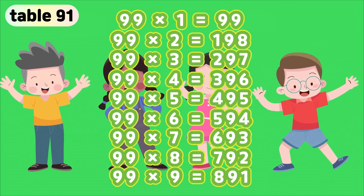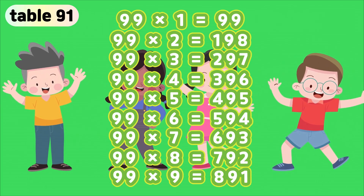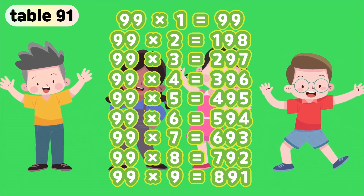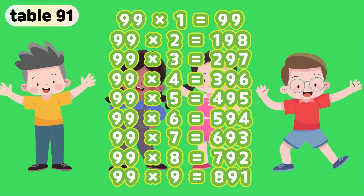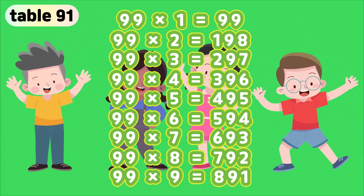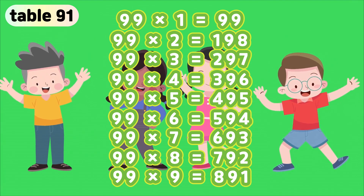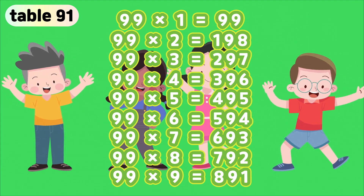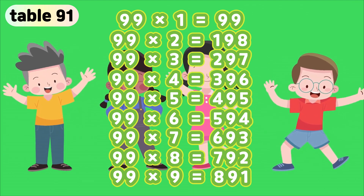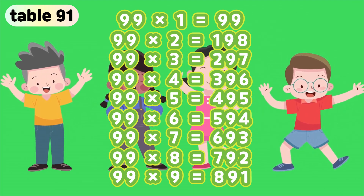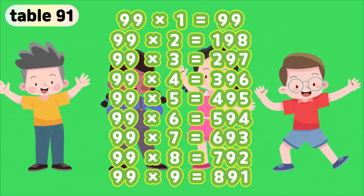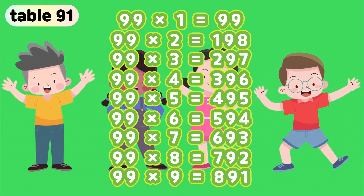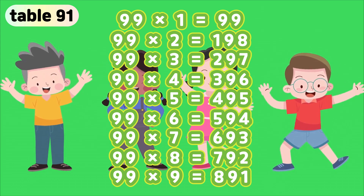Table 99. 99 times 1 is 99. 99 times 2 is 198. 99 times 3 is 297. 99 times 4 is 396. 99 times 5 is 495. 99 times 6 is 594. 99 times 7 is 693. 99 times 8 is 792. 99 times 9 is 891.